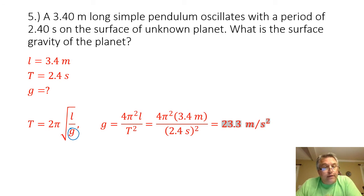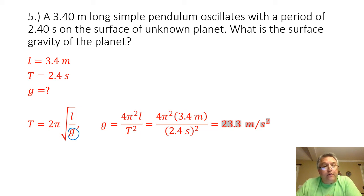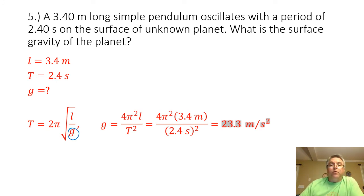Squaring everything gives T squared equals 4π squared times L over g. Solving for g gives g equals 4π squared times L divided by T squared. Plugging in the values for length and period into this formula gives a gravitational acceleration for this planet of 23.3 meters per second squared.